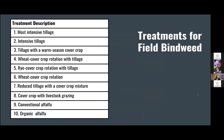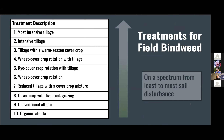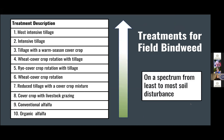Kara has two different studies: one completed, one still ongoing. The first looked at different treatments for field bindweed at the Western Agricultural Research Center in Corvallis, with 10 different treatments organized on a spectrum from least to most soil disturbance. At one end there's an intensive tillage regime in fallow, and at the other end a perennial crop — alfalfa — one receiving glyphosate treatment at the beginning of the study, and the other kept organic.